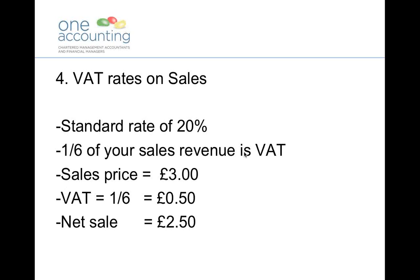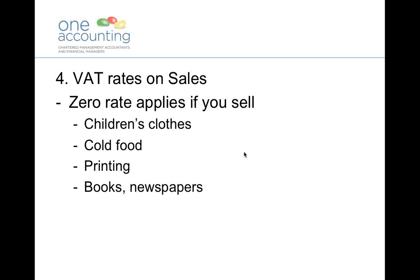Step four: how VAT is actually calculated on sales. For a VAT-registered business at the standard VAT rate of 20%, the way to calculate this is that one sixth of your sales revenue should be declared as VAT. Say you're a retail shop selling a CD with a sales price of £3.00 — you divide the sales price by six, giving VAT of 50p. So the net sale to your business is £2.50. Just remember the rule of one sixth.